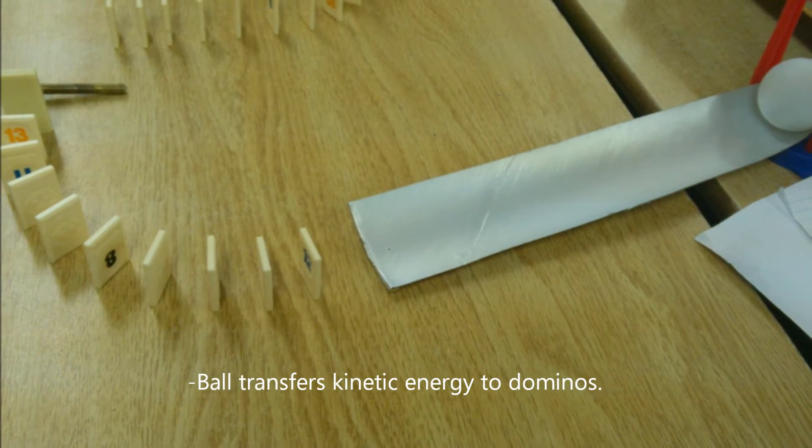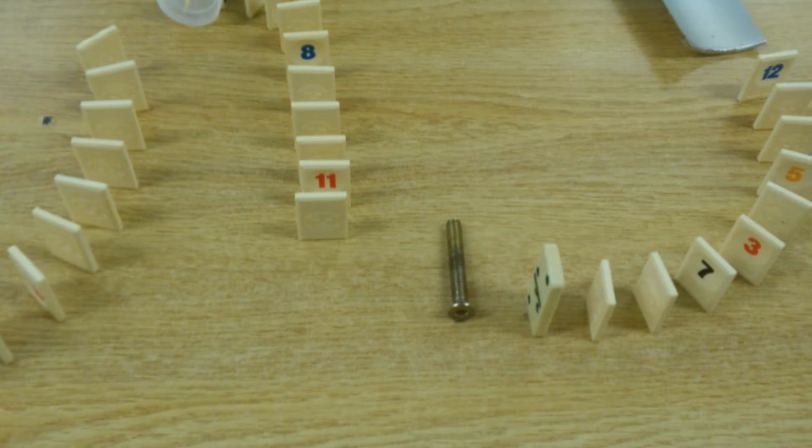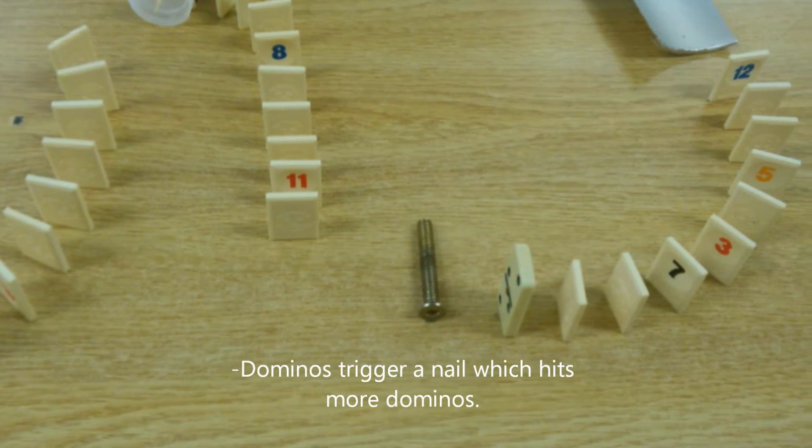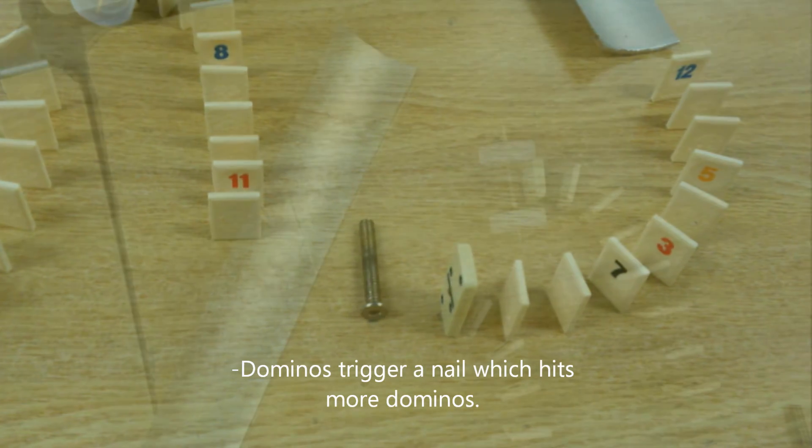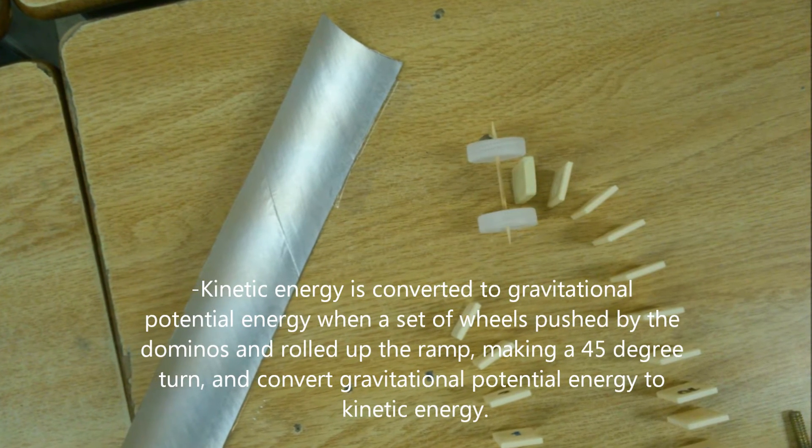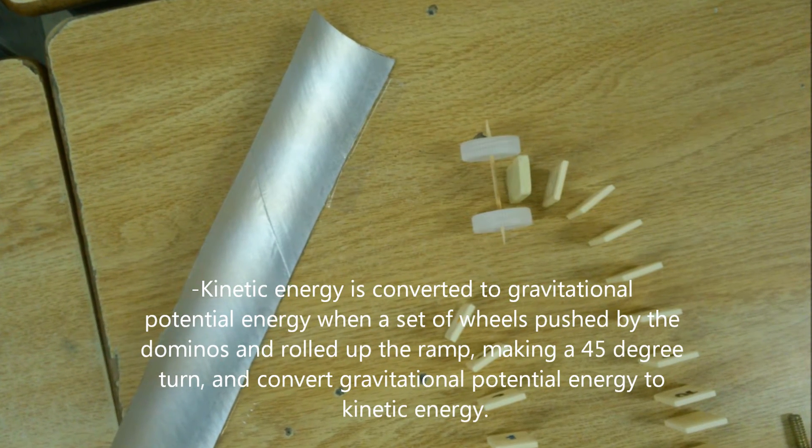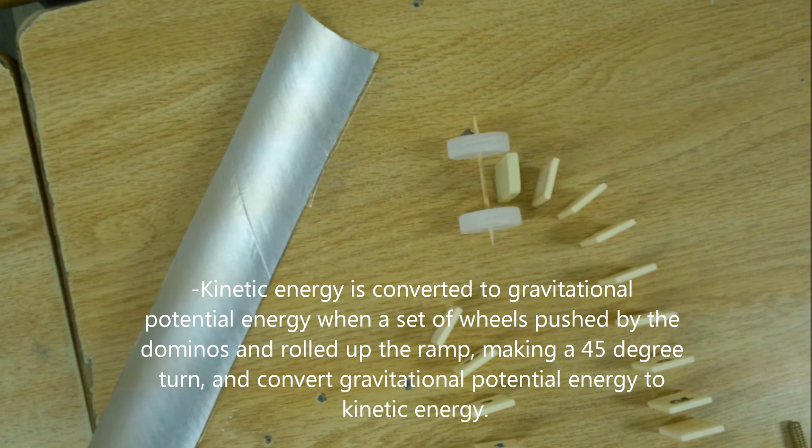Now the dominoes will trigger a nail which will set off another set of dominoes. The dominoes will push a set of wheels and it will roll up a ramp until all the kinetic energy is converted to gravitational potential energy and fall back down with kinetic energy at a 45 degree angle.